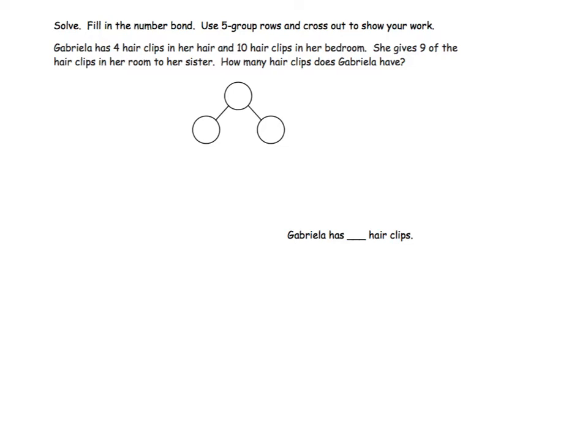To begin, I will fill in the number bond. Gabriela has 4 hair clips in her hair and 10 hair clips in her bedroom. 4 and 10 are parts of the total which make 14. I will write these numbers in the number bond.